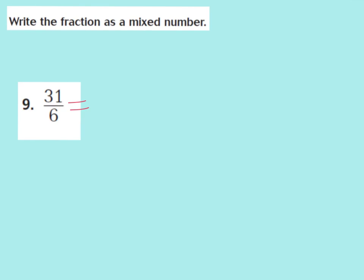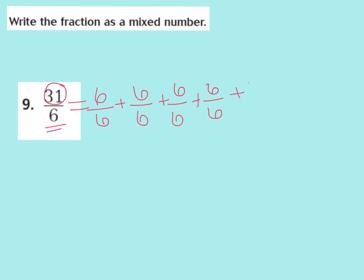I'm going to start pulling out wholes from 31/6. I know that a whole out of 6 is 6/6. My goal is to add up to 31/6. So far I have 6/6. I can add another 6/6, which makes 12. Another 6/6 makes 18. Now I have 24. Another 6/6 would put me at 36/6 — but I can't add another 6/6 because that would go over 31. So if I'm at 30 and I want to get to 31/6, I can add 1/6.